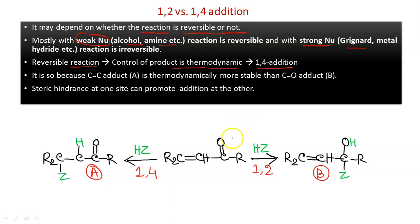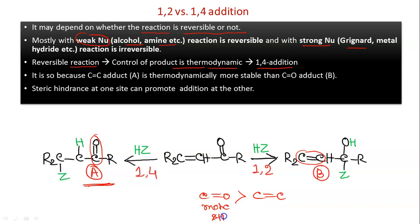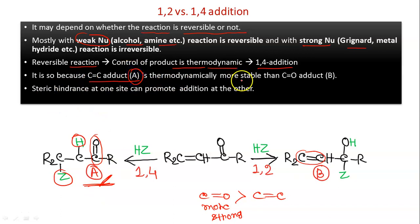A strong nucleophile — one that is more reactive and less stable, such as a Grignard reagent or a metal hydride like lithium aluminum hydride or sodium borohydride — makes the reaction irreversible, leading to 1,2-addition. In 1,4-addition the C=O group remains intact, while in 1,2-addition the C=C double bond remains intact. Since the C=O double bond is stronger than the C=C double bond, the product of 1,4-addition (C=C addition, C=O intact) is thermodynamically more stable.